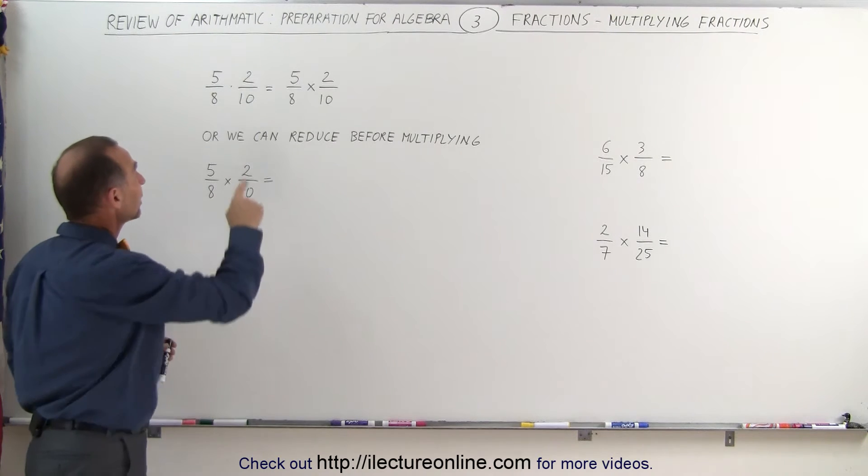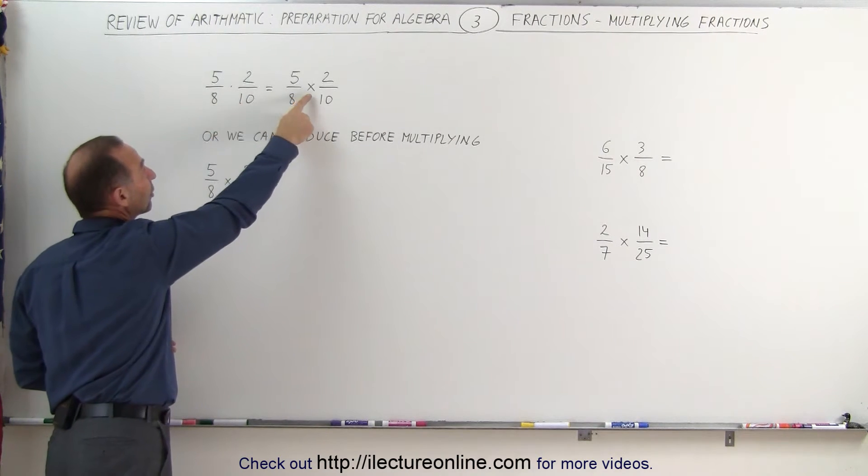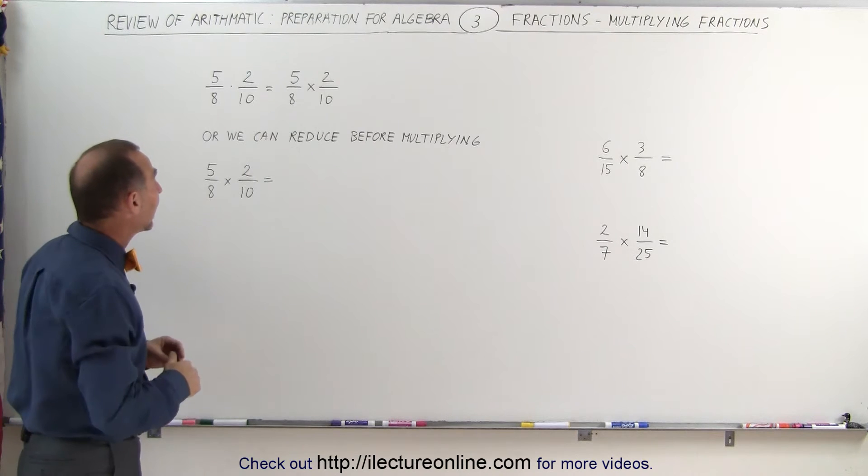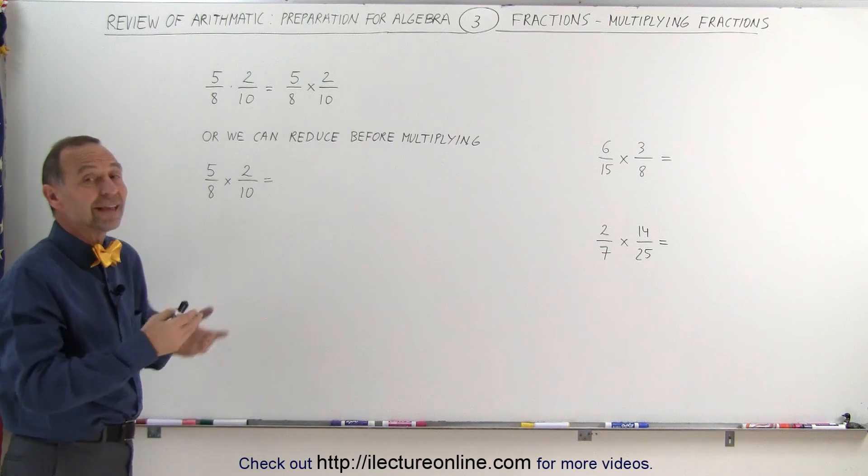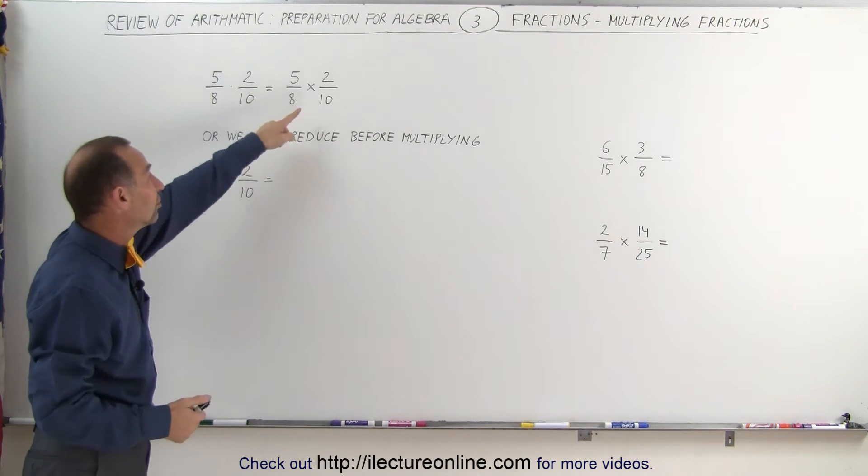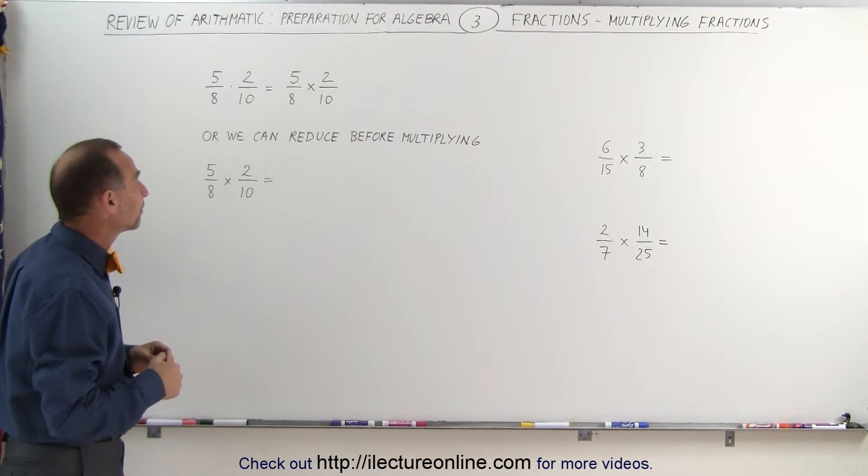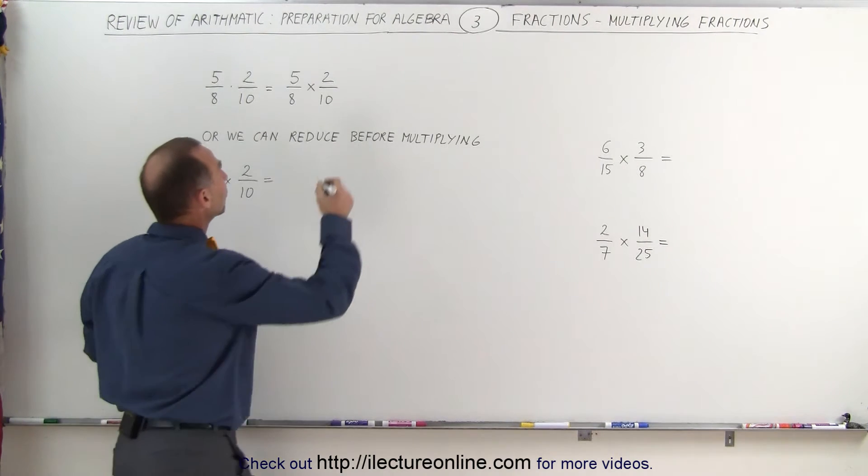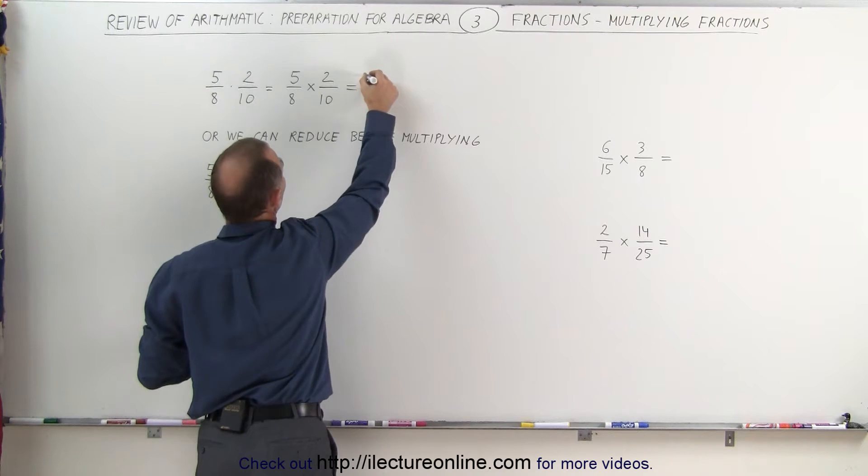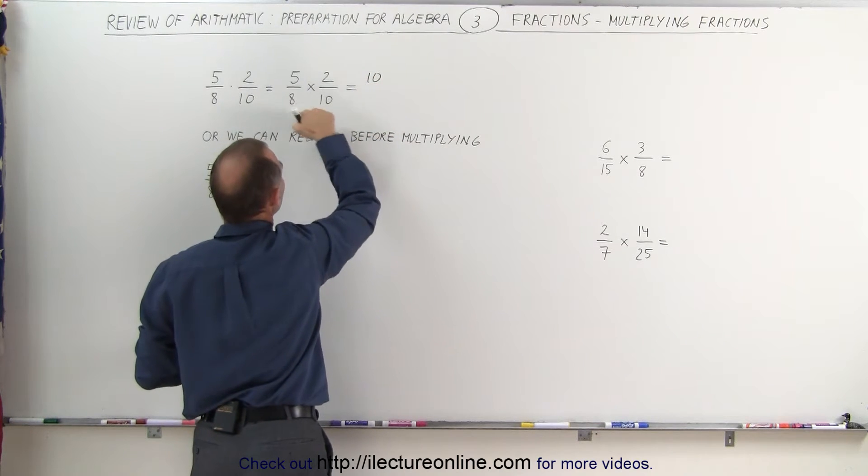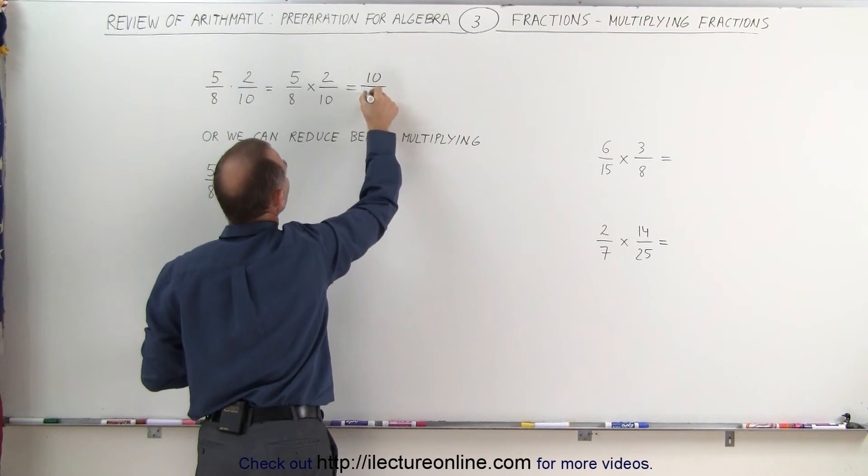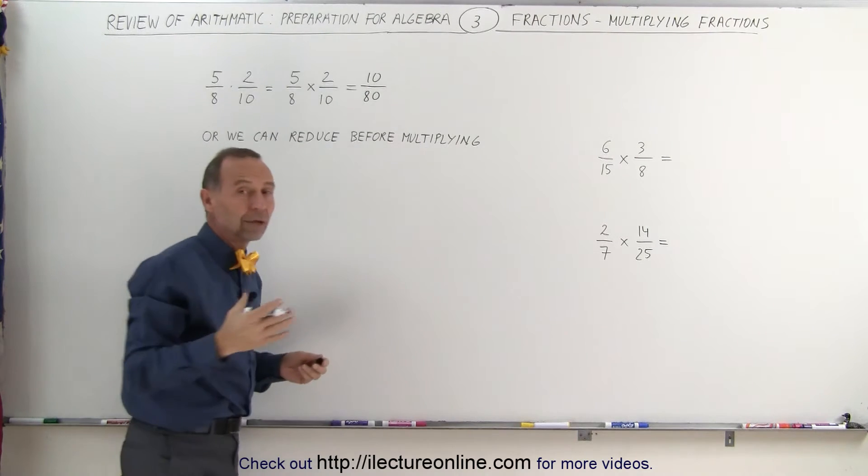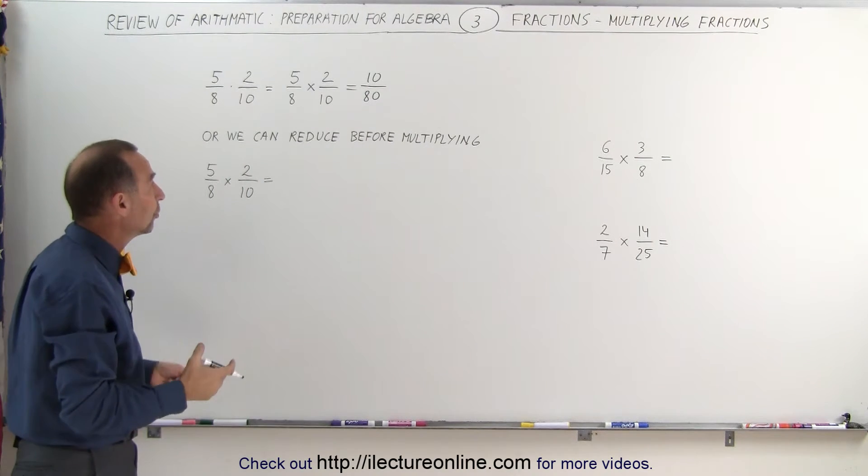Also notice that here we use a dot and there we use a little multiplication symbol, and it turns out that's really the same thing. So when you see a dot or multiplication symbol, it's exactly the same thing. So what we need to do is multiply the numerators together. 2 times 5 is 10. Multiply the denominators together. 8 times 10 is 80.